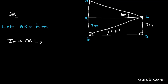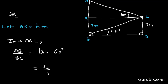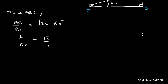Now we shall move to triangle ABC. We shall find the ratio of AB over BC. This equals tan 60 degrees, and tan 60 degrees is √3. AB is h, and BC we have to calculate. Therefore BC equals h over √3. This is our equation number one.